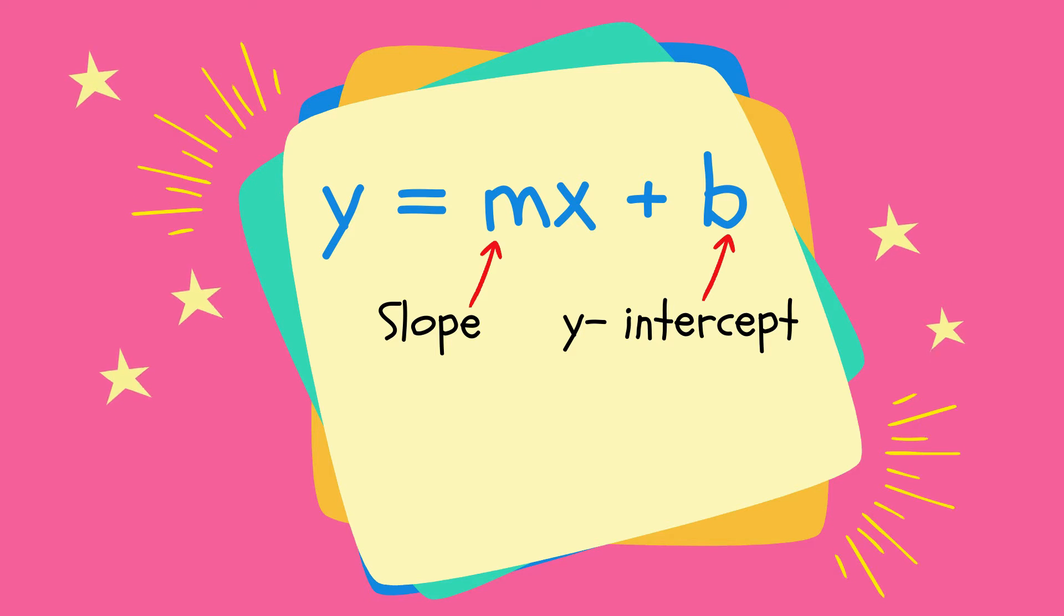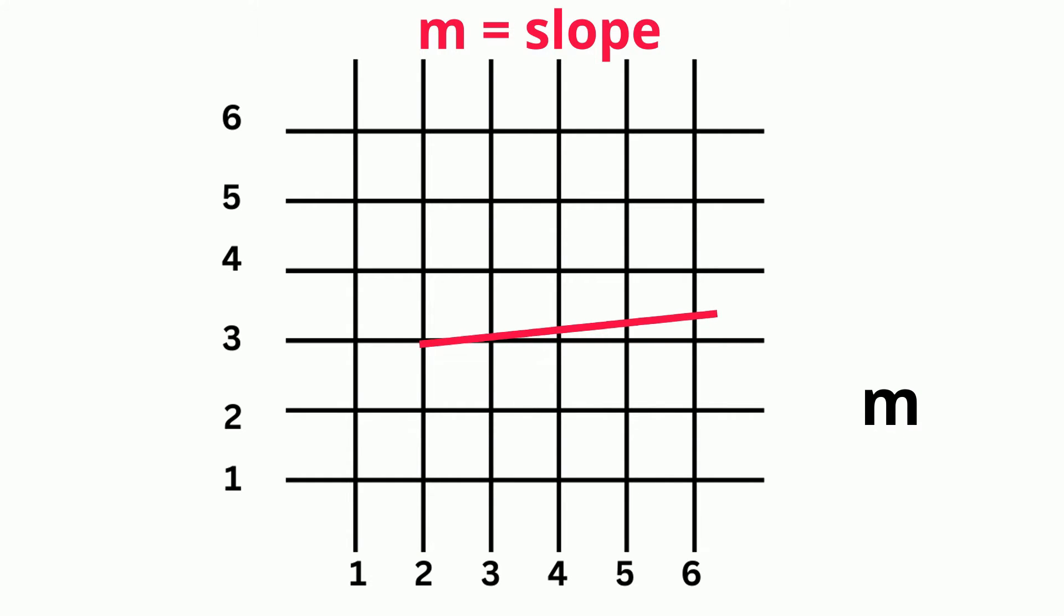The slope tells you how steep the line is. As m increases, so does the steepness of the line. The larger the slope, the steeper the line, or in other words, the greater the rate of change.